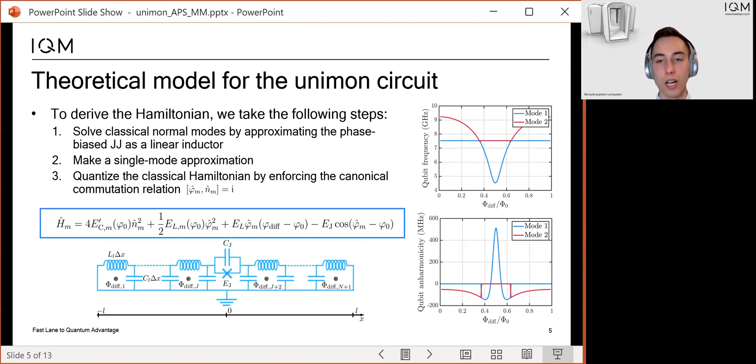On the right, I am showing you a theoretical prediction for the qubit frequency and the anharmonicity as a function of the external flux difference for some realistic parameter values. At the half-flux quantum point, there is a flux-insensitive sweet spot at which the qubit is first-order insensitive to flux noise.